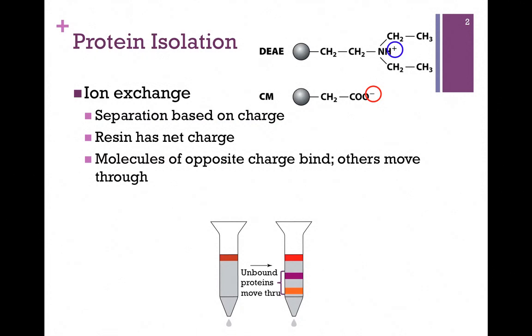In this case, the separation is based on charge rather than size. We still have a stationary phase that is a resin contained within the column, but the resin, rather than being a porous bead through which molecules move in and out or might be excluded, has attached to it a group that gives it a net charge.